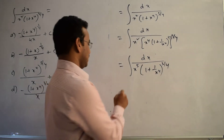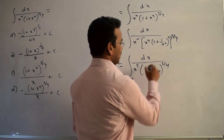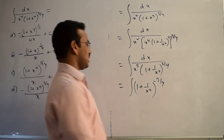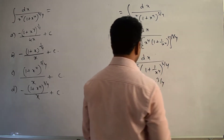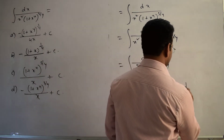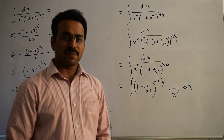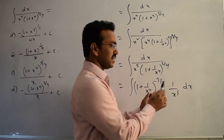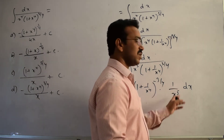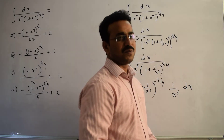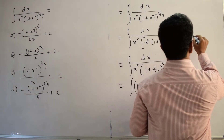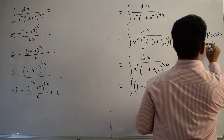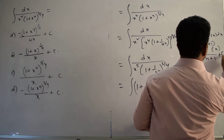I can rewrite this as ∫ (1 + 1/x⁴)^(−3/4) · (1/x⁵) dx. When facing this type of integration, if the derivative of the inner function gives a 1/x⁵ form, we can apply the formula: ∫ [f(x)]^n · f'(x) dx = [f(x)]^(n+1) / (n+1) + C.